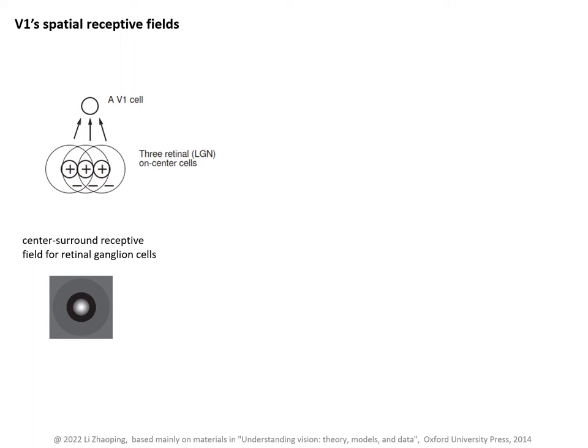As a result, the receptive fields are often tuned to a spatial orientation. In this example, this neuron can be excited by a horizontally oriented white bar. So V1 receptive fields tend to be somewhat larger than retinal ganglion cells' receptive fields at the same spatial location.